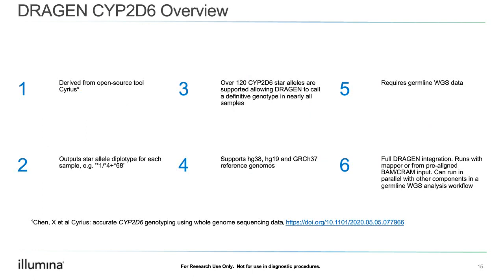The tool we have used is derived from a group led by Mike Eberle at Illumina, called Sirius. We worked closely with that team to integrate this capability into Dragon. It is based on Cyrius — there is a paper available on this tool. It outputs all star allele diplotypes, with about 120 star alleles supported. We have support for various reference genomes. It requires germline whole genome data — not exomes — and supports in-Dragon with full integration, running with the mapper whether you have FASTQ files or pre-aligned BAM or CRAM files.